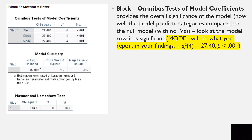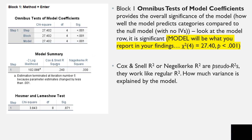Block 1 shows the Omnibus Test of Model Coefficients, which provides the overall significance of the model — how well it predicts categories compared to the null model. Look at the Model row: it is significant. Chi-square with 4 degrees of freedom equals 27.4, p less than .001. In the Model Summary, we have negative 2 log likelihood, Cox and Snell R-square, and Nagelkerke R-square. The Cox and Snell and Nagelkerke R-squares are pseudo-R-squares that describe how much variance is explained by the model. We will use the Nagelkerke.